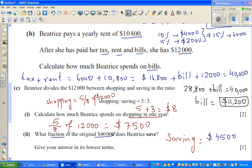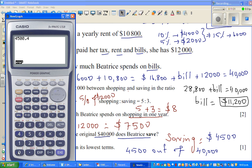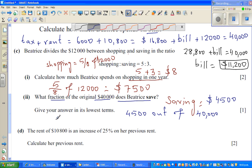What fraction of the original $40,000 does Beatrice save? So she is saving $4,500 out of $40,000. So this you want to write as a fraction. So there's a fraction key on the calculator. So it's $4,500 ABC $40,000. It simplifies for you. It's $9 out of $80. So as a ratio, so as a fraction, the answer is 9/80.